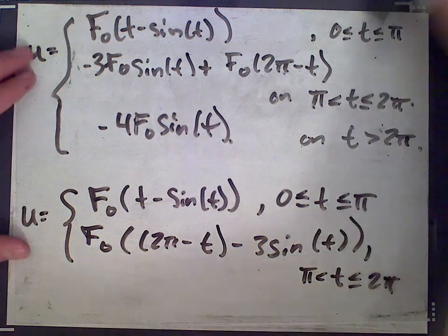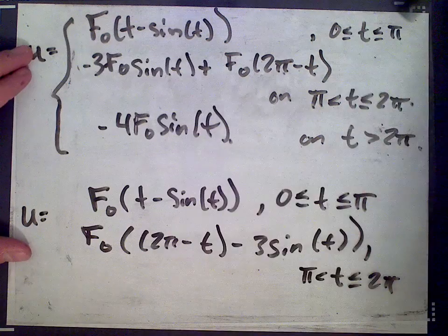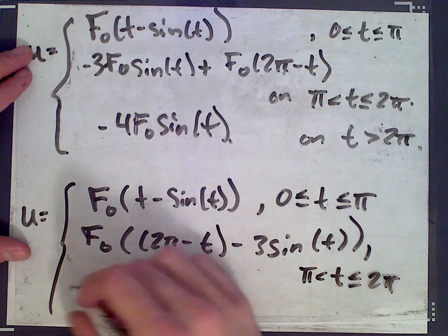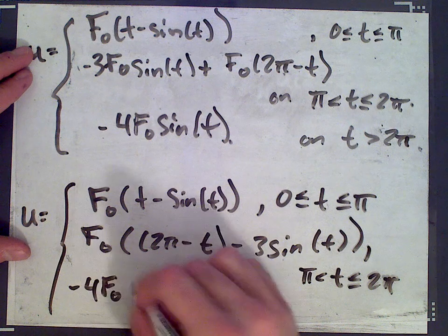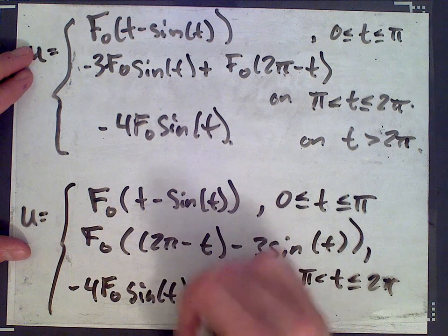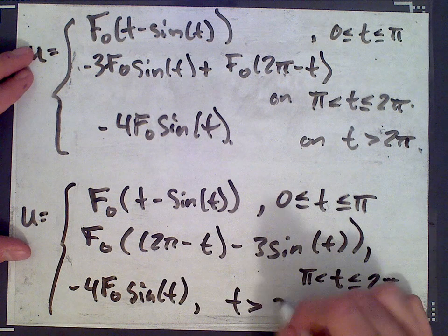And then for values bigger than 2π, we have negative 4 f0 sine of t for t bigger than 2π.